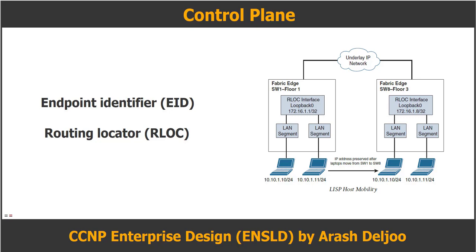SD Access uses LISP as the control plane protocol to handle the mapping and resolution of endpoint identifiers. The two main things LISP tracks are the Routing Locator, or RLOC, which is the attached router, and the Endpoint Identifier, or EID, which is the IP address or MAC address. Together, the RLOC and EID provide the information needed for traffic forwarding even if the IP address moves within the edge of the network. LISP enables decoupling of the EID and routing locator, which provides mobility to the endpoints. LISP is an IETF standard protocol defined in RFC 6830. LISP provides advantages such as less CPU usage, smaller routing tables, host mobility, and address mapping between IPv4, IPv6, or MAC with VRF awareness.